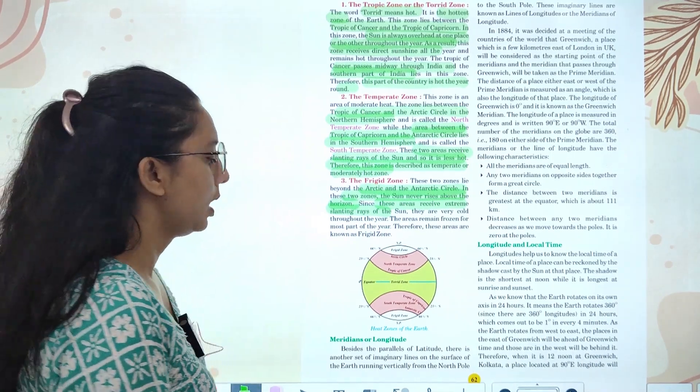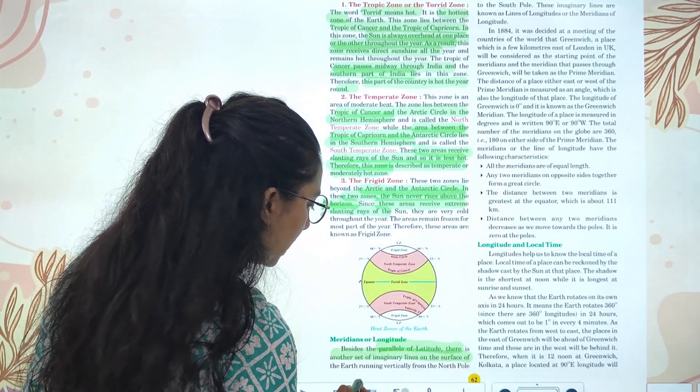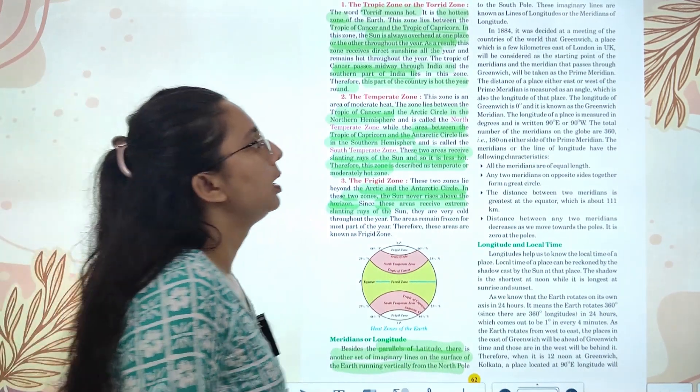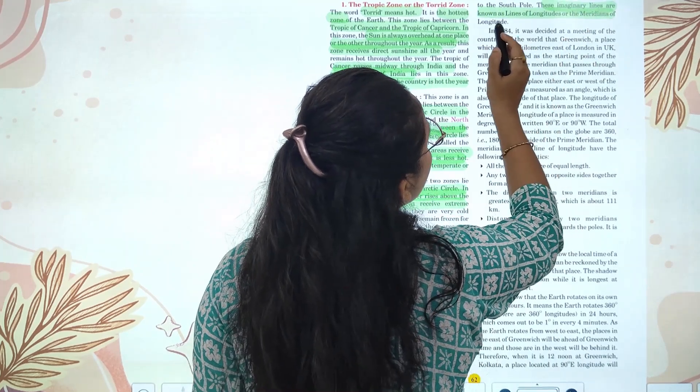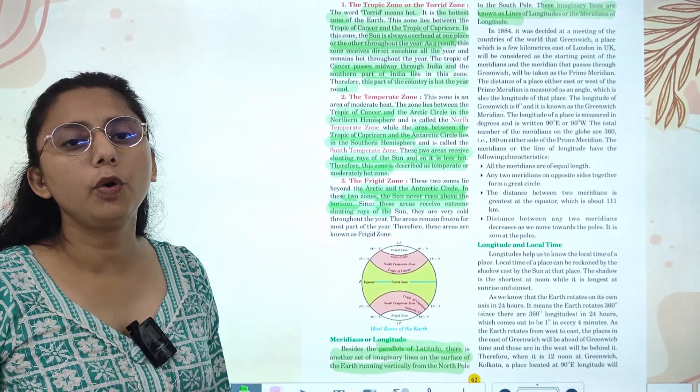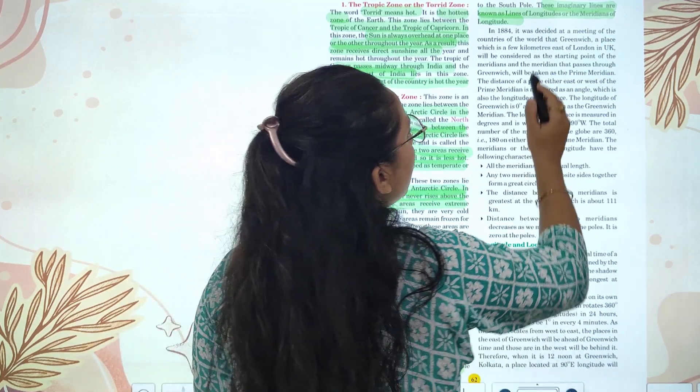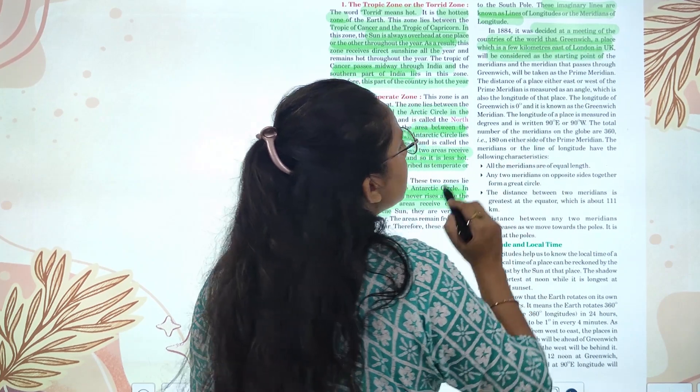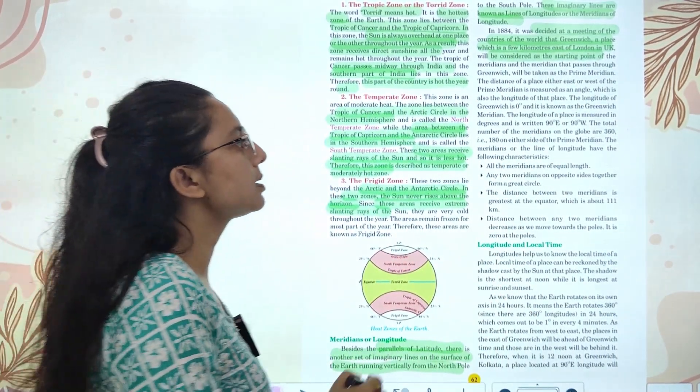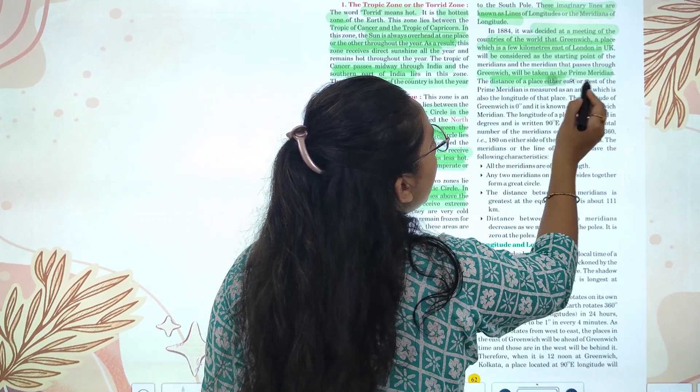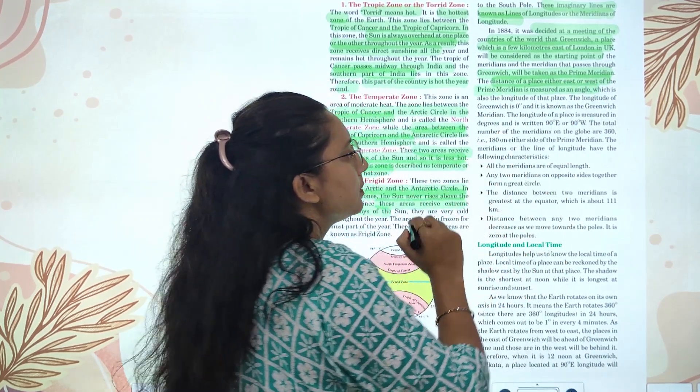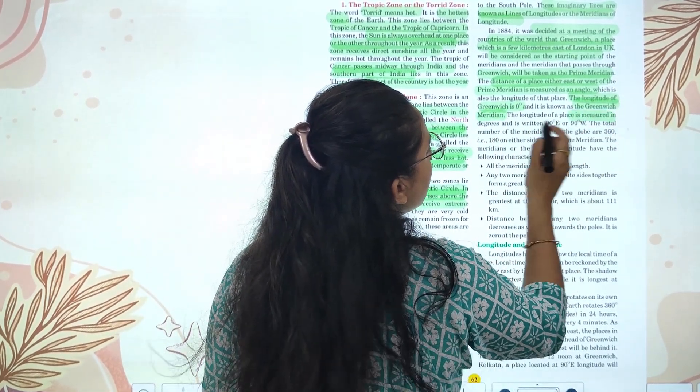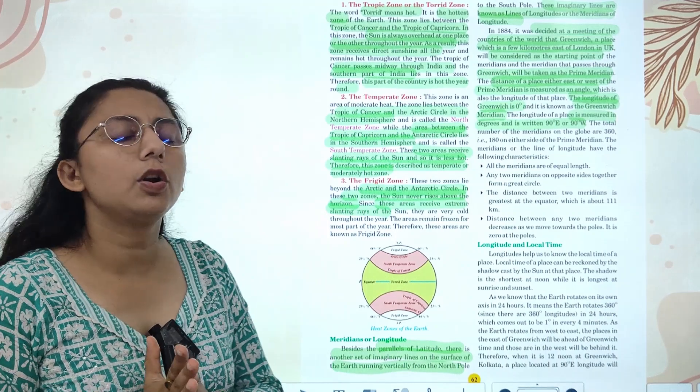Now, meridians of longitudes. Besides the parallels of latitude, there is another imaginary line on the surface of the Earth which runs vertically, north to south. These imaginary lines are known as lines of longitudes and meridians. In 1884, it was decided at a meeting of countries in the world that Greenwich, which is a few kilometers east of London, would be the starting point of meridian. This line passing through Greenwich is called prime meridian. Your longitude at zero degrees is the Greenwich meridian.